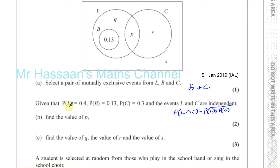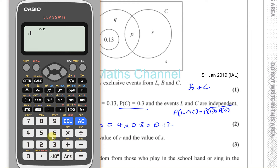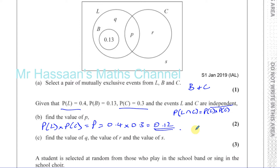P is the intersection between L and C. So the probability of L times the probability of C gives us P. That's going to be 0.4 times 0.3, which gives 0.12. So the answer for part B is P = 0.12.